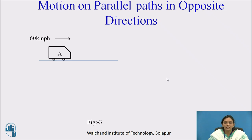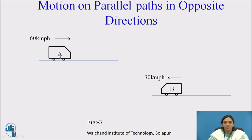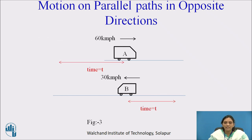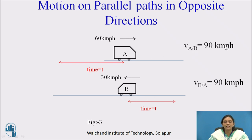Now we will discuss motion on a parallel path in opposite directions. Car A and car B are moving parallel but in opposite directions. The velocity of car A is 60 kilometers per hour and the velocity of car B is 30 kilometers per hour. When these two cars pass each other at time interval t, they feel that the opposite car is moving very fast. According to the observer in car A, the relative velocity of car B is 90 kilometers per hour, and same according to B, the velocity of car A is 90 kilometers per hour. So here there is an addition of the two velocities.